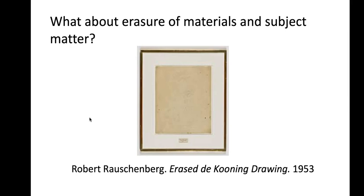A couple of things are going on here. Rauschenberg was a young artist probably trying to make a name for himself, so this was a shocking or radical work. On the other hand, he's also making us think about what an artist is — does an artist make things, or destroy things when they make something? Is the creative act about birthing something new or an act of destruction? He's also making us think about who gets considered an artist. Is this now an artwork by Rauschenberg or is it still an artwork by de Kooning? The choice of materials creates lots of interesting questions when we analyze this work.